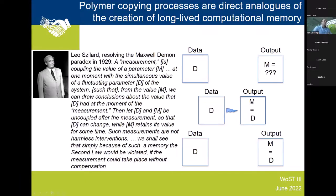Szilárd pointed out in 1929 that this process is at the heart of resolving the Maxwell demon paradox. If you can take some data, copy its value into memory via some interaction, and then separate the two so the memory is retained — if you could do that without any thermodynamic cost — you'd be able to violate the second law. From that you can explain why Maxwell's demon and Szilárd's engine don't actually violate the second law.